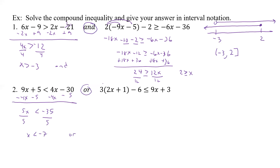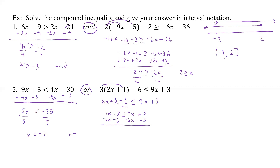Or, now here we have the distribution again, so we have to do that. So we have 6x, and we have plus 3 minus 6, less than or equal to 9x plus 3. Well, we can simplify — we have like terms — so we have 6x minus 3, less than or equal to 9x plus 3. And if we want positive x's, let's subtract 6x here, and subtract 3 here. Those cancel. We have minus 3 minus 3 is minus 6, less than or equal to 9 minus 6 is 3x. Now we divide by 3. So we have negative 2, less than or equal to x.